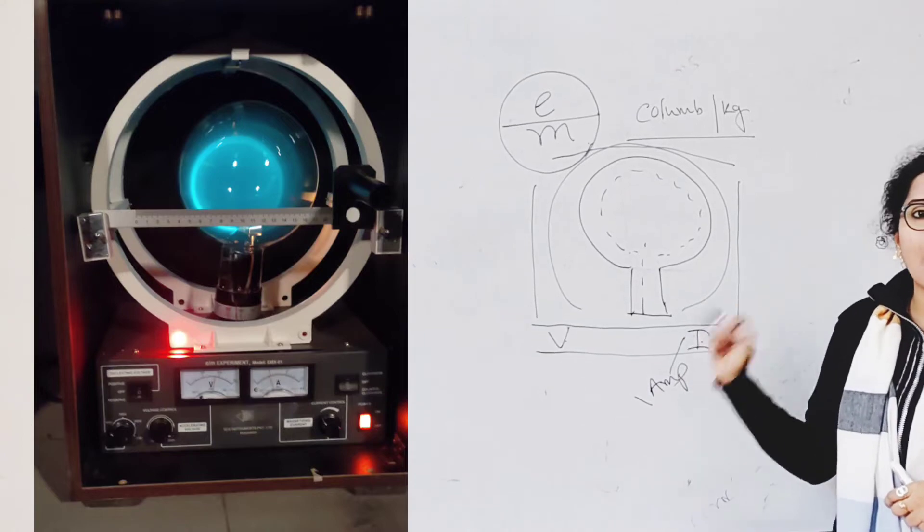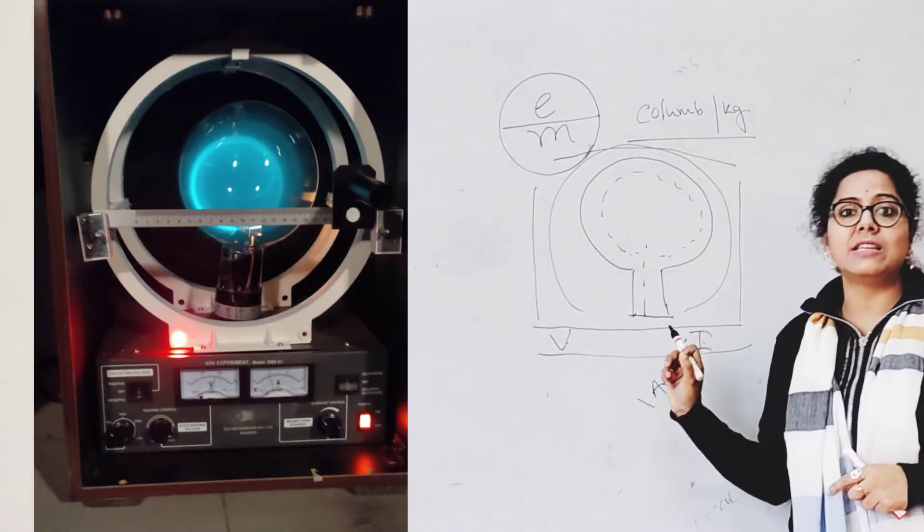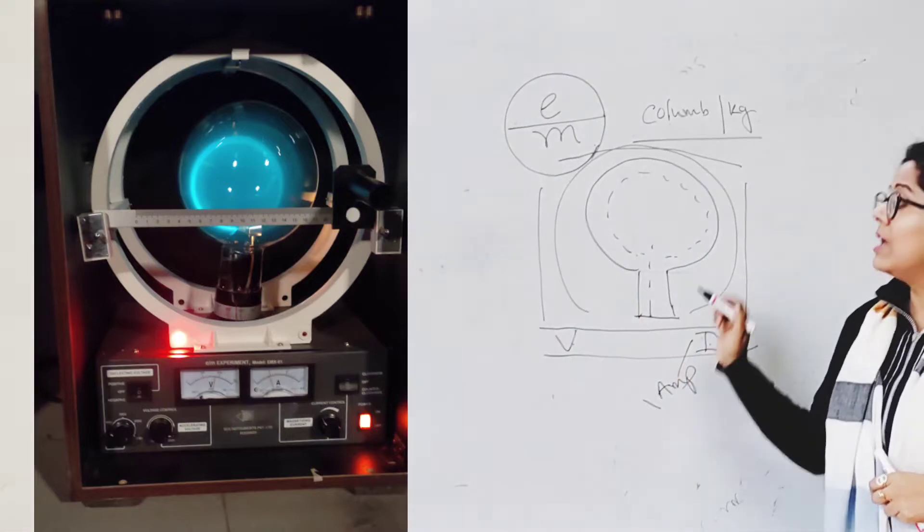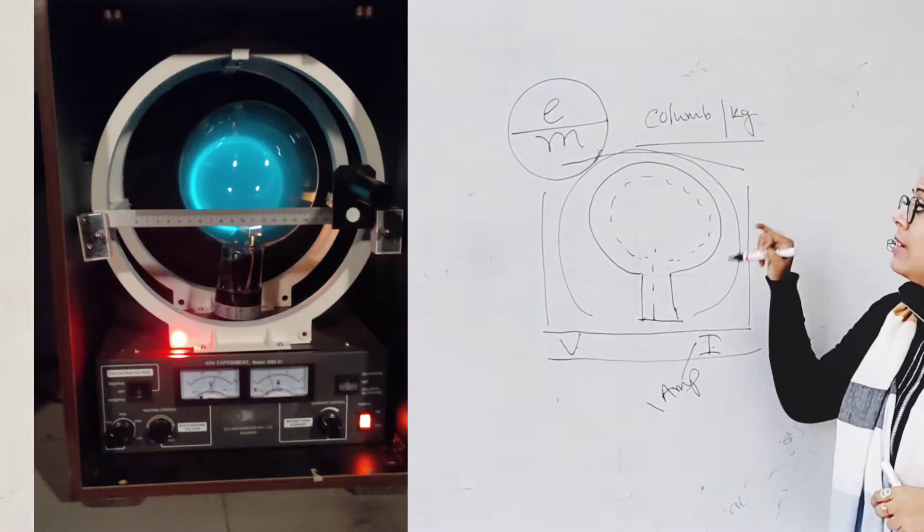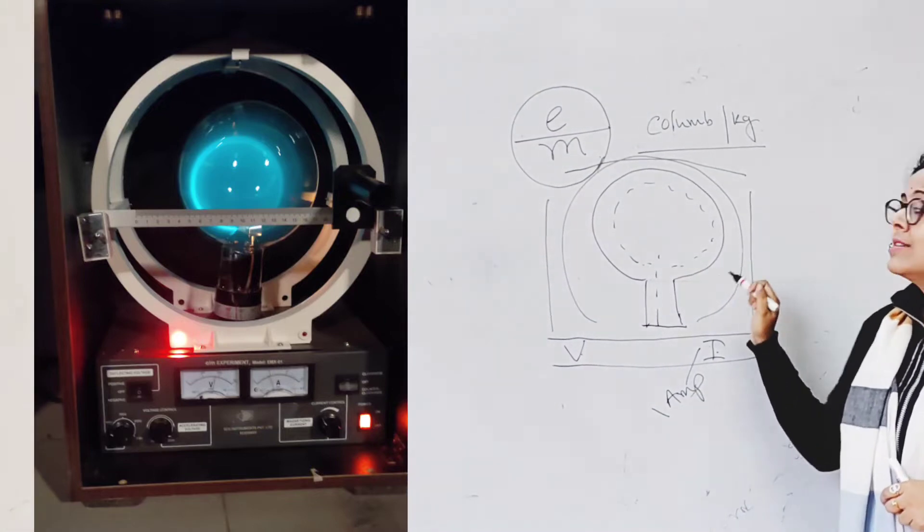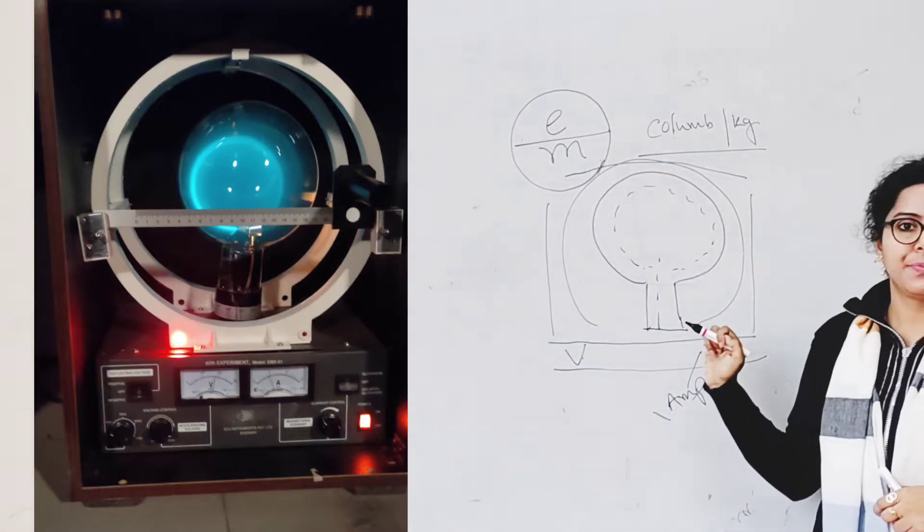Since the Helmholtz coil path is circular, magnetic path is circular, so the ring formed in a circular wave.